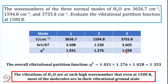What is interesting to note: the highest wave number (mode 3) has the minimum partition function of 1.028, while the lowest wave number, 1594.8 cm⁻¹, has the highest partition function of 1.276. This indicates that if a vibrational normal mode is at a lower wave number — meaning the energy level separation is smaller — there will be a larger vibrational partition function. This inverse correlation can be verified from the table values.